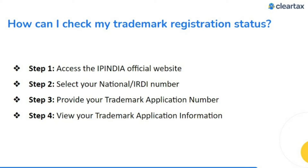How can I check my trademark registration status? Step one: access the IP India official website. Step two: select your national or IRDI number. Step three: provide your trademark application number. Step four: view your trademark application information.